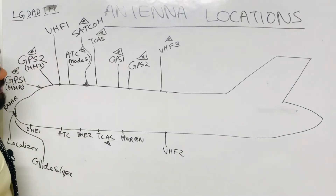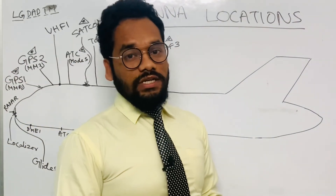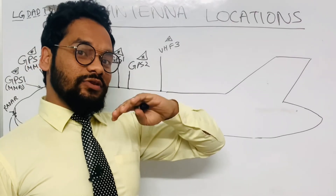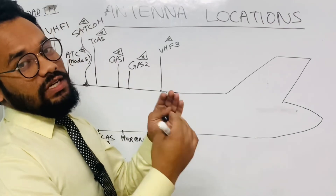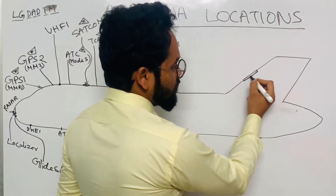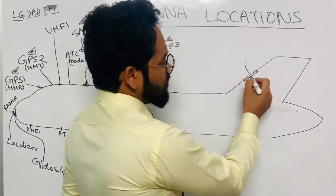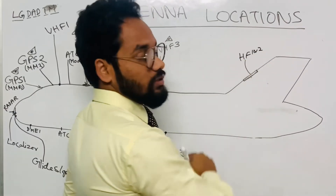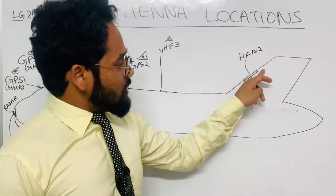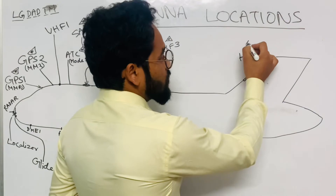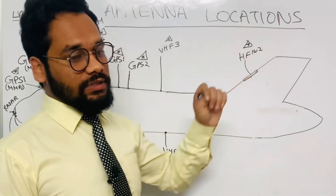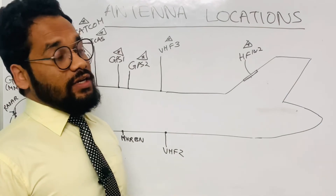For the HF — High Frequency — antenna, remember that 'high' means on top. The HF antenna is located on top in the vertical fin, flushed inside it. Both HF 1 and HF 2 antennas are located in the vertical fin. This is again an optional feature marked with a triangle and star, as it can vary with various MSN numbers.